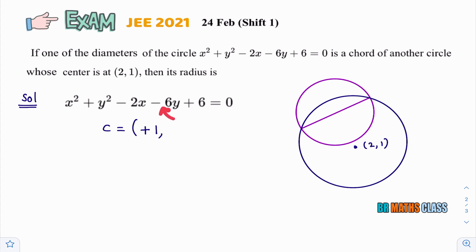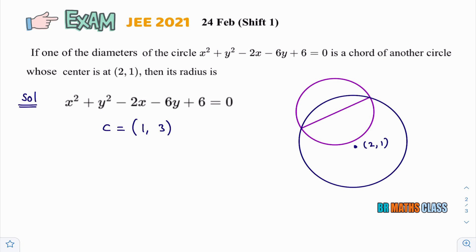Now, you observe y coefficient. What sign is there? Minus sign is there. So, you write plus. After that, you divide this number by 2. 6 divided by 2 is 3. So, center of given circle is (1,3).